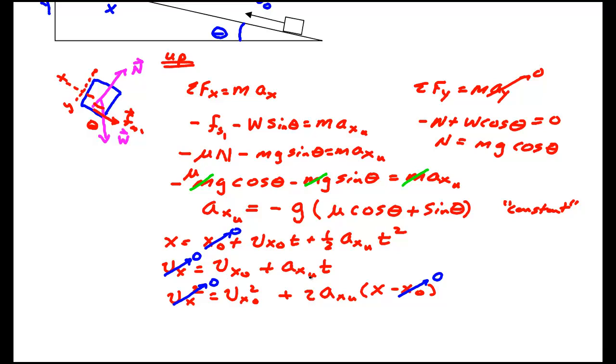vₓ₀ is simply the initial velocity v₀. aₓᵤ is minus g times μ cos θ plus sin θ. I have that right here. So I have a formula, know that. So the only unknown in this problem is time. I can determine the time it takes to go up. I want to give that a little subscript and call that tᵤ.